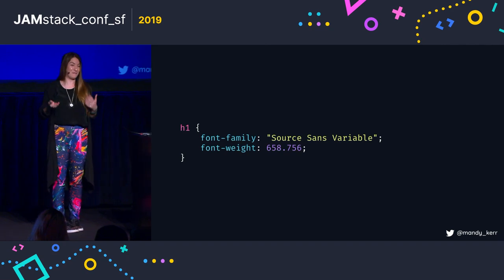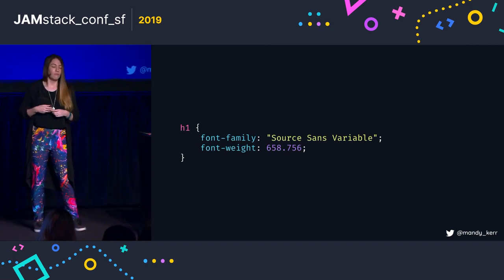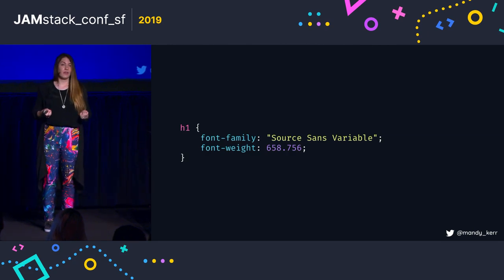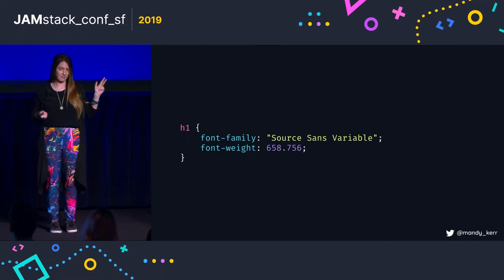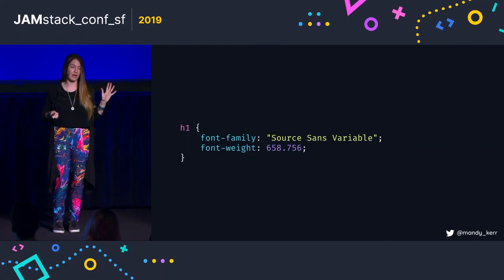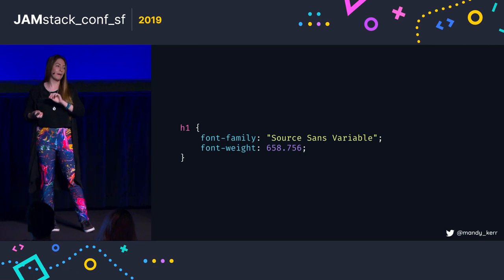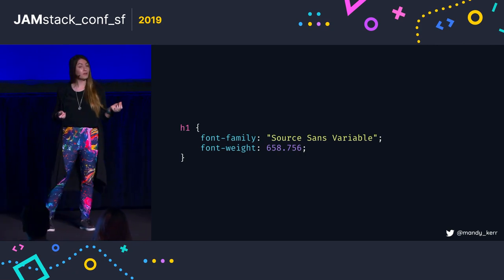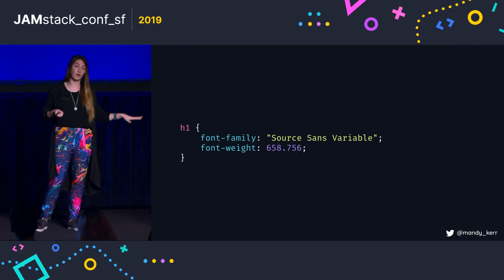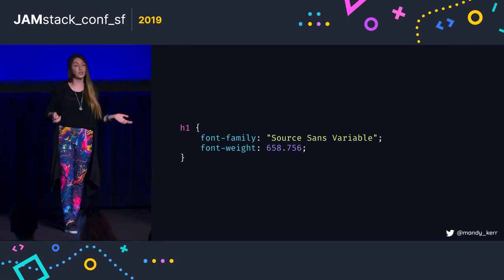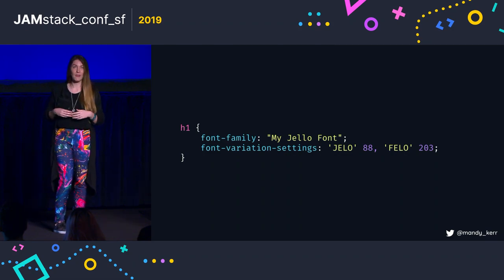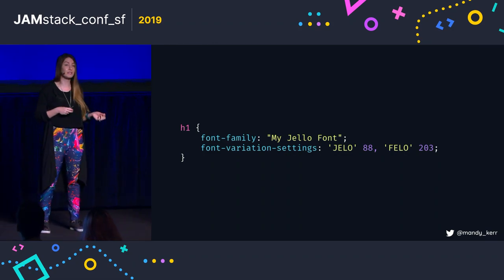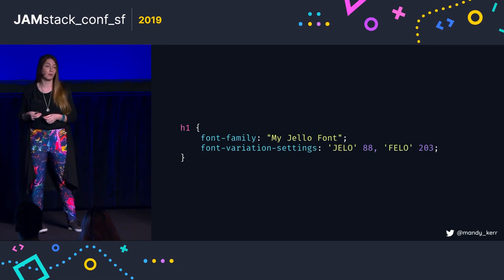This is really good for weight because we have a CSS property for that. That's known as a registered axis. There are five registered axes at the moment: weight, width, slant, italic, and optical size. These are all mapped to pre-existing CSS properties. But if we want to do something custom like that DecoVar example, we need a new CSS property called font-variation-settings, which allows us to define as many registered and custom axes as we want.